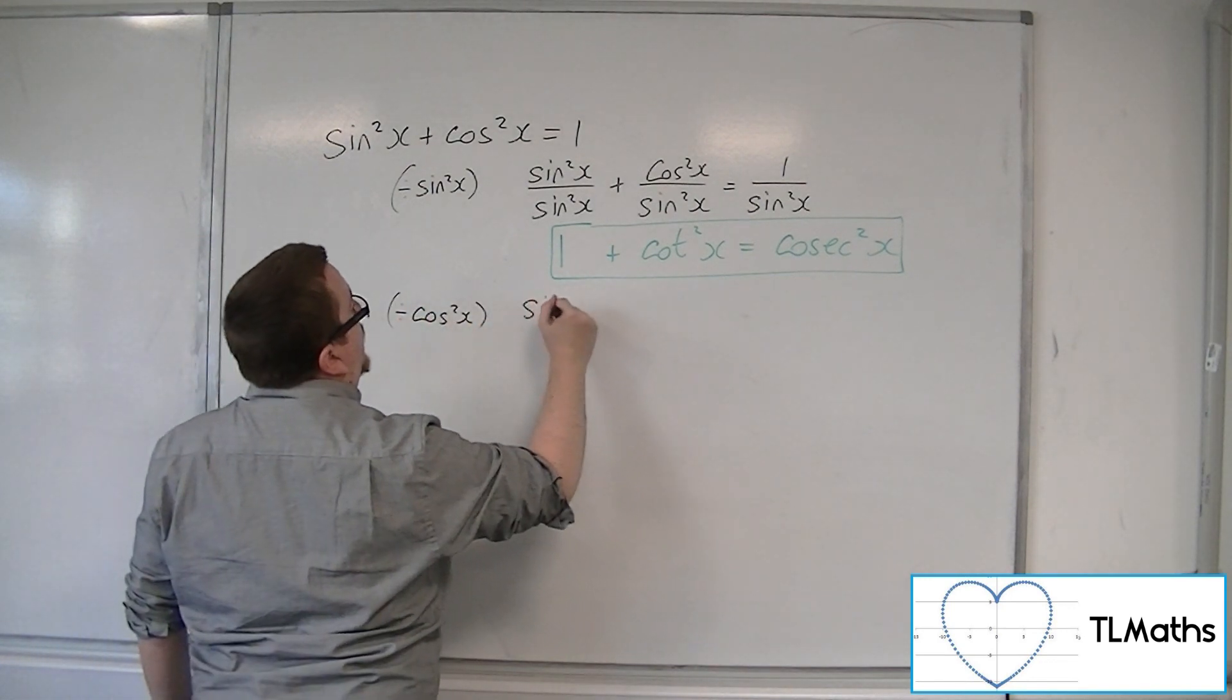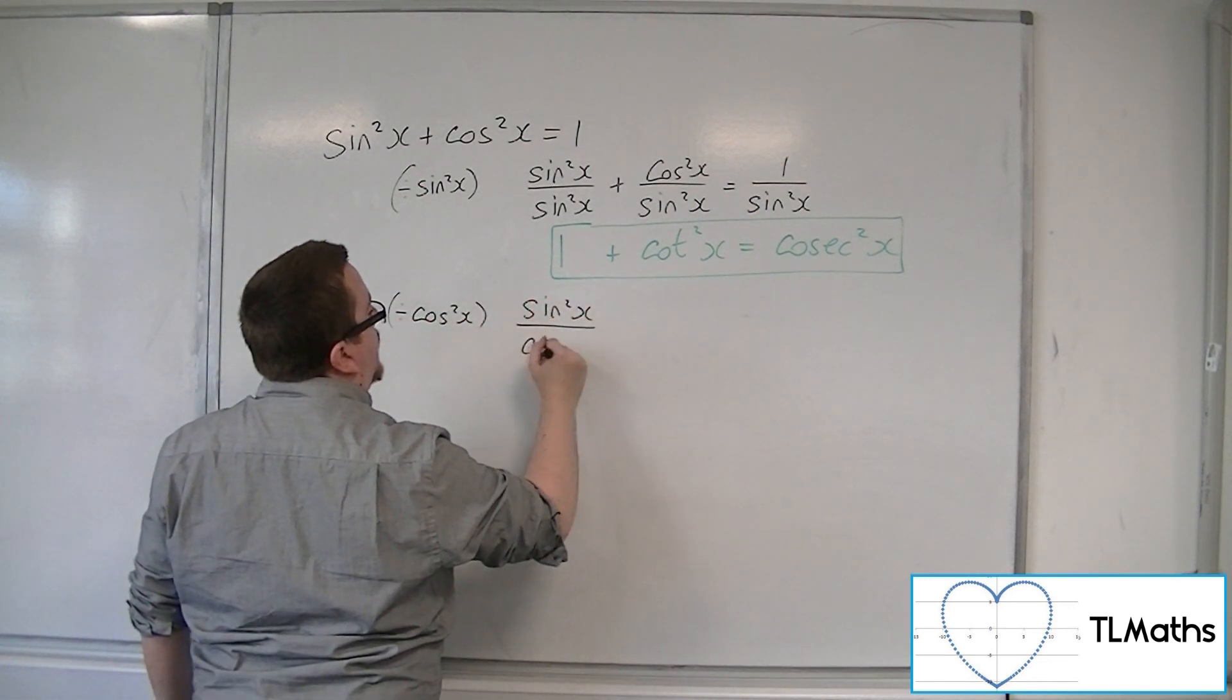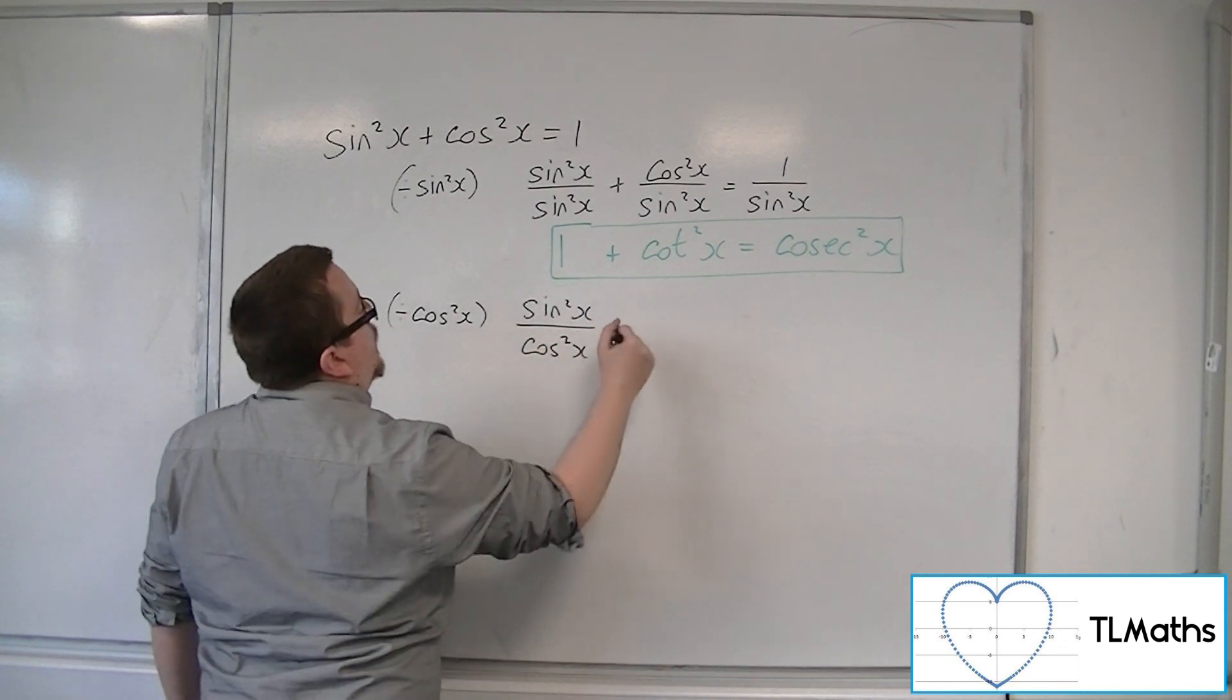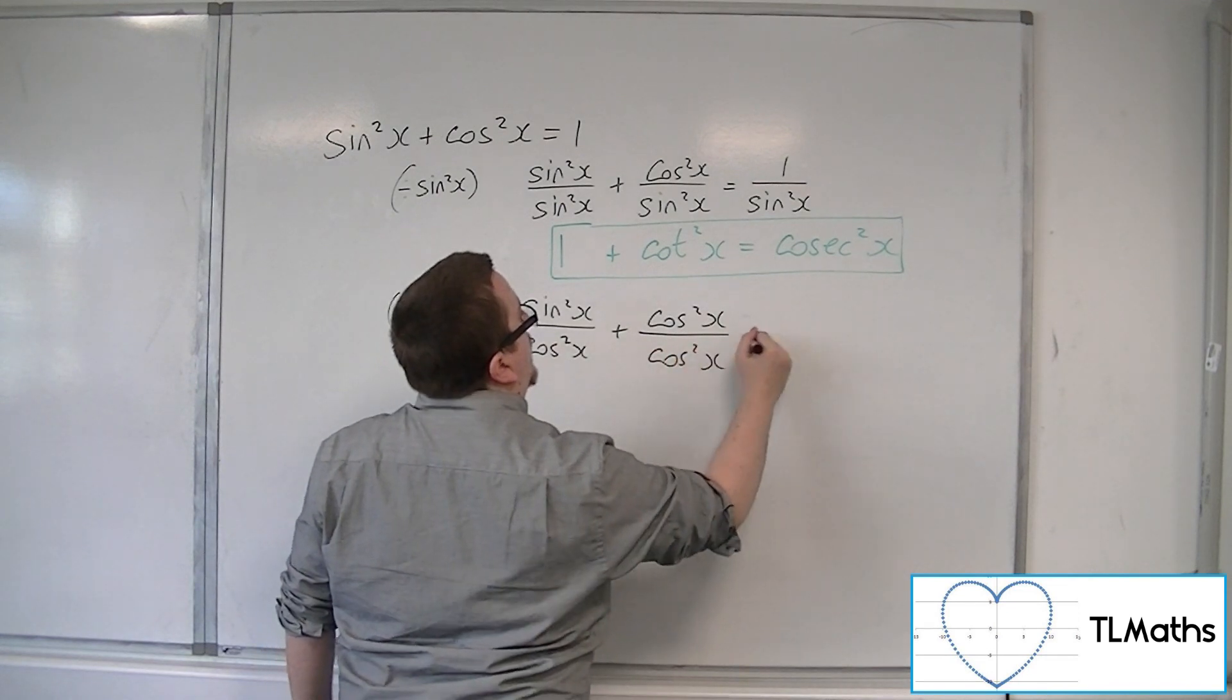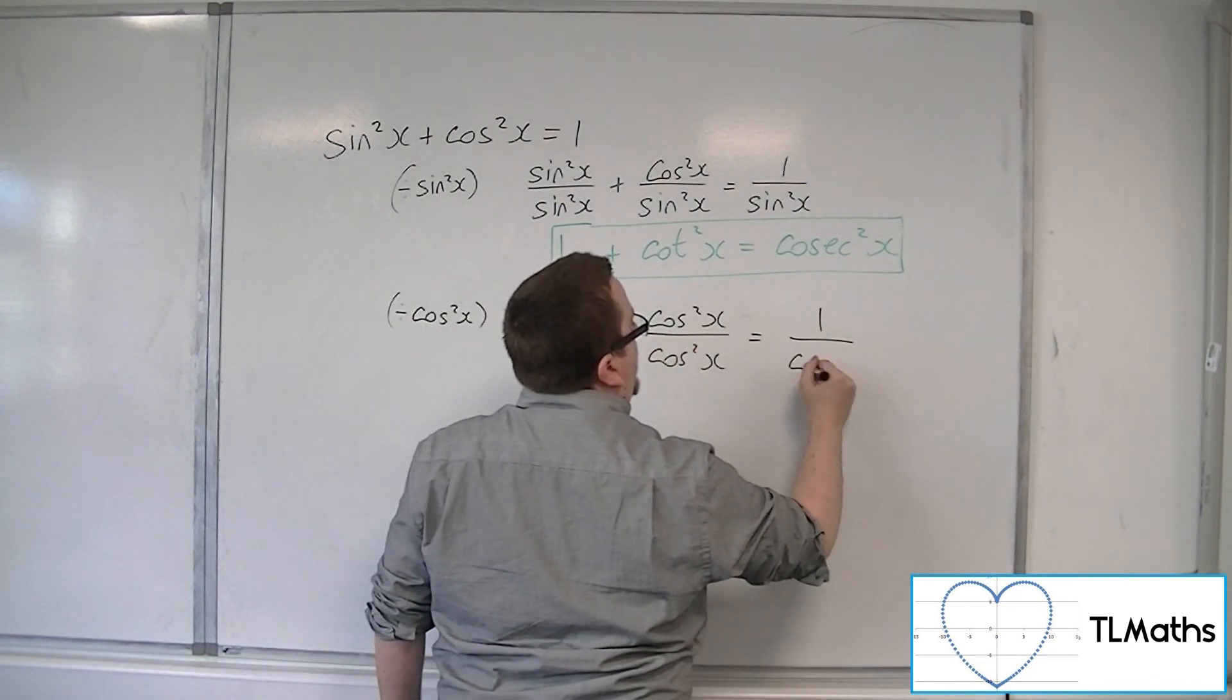then I'm going to get sine squared over cos squared plus cos squared over cos squared is equal to 1 over cos squared.